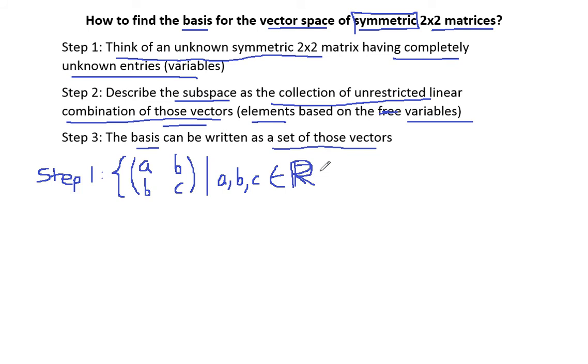The matrix will be a, b, b, c where a, b, and c are real values. Step 1 is done. Now we can see that we have three variables: a, b, and c.